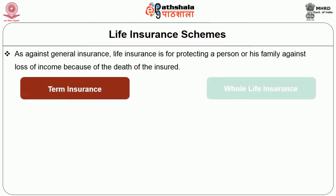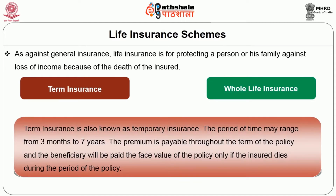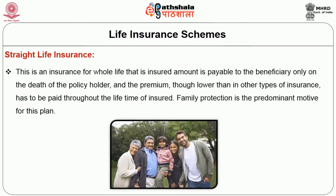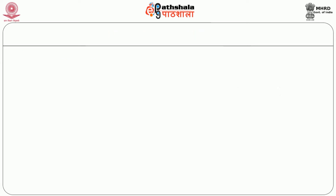In general, there are two types of policies: term insurance and whole life insurance. Term insurance is also known as temporary insurance. The period of time may range from 3 months to 7 years. The premium is payable throughout the term of the policy and the beneficiary will be paid the face value of the policy only if the insured dies during the period of the policy. Straight life insurance is insurance for whole life; that is, the insured amount is payable to the beneficiary only on the death of the policyholder, and the premium, though lower than in other types, has to be paid throughout the lifetime of the insured. Family protection is the predominant motive for this plan.